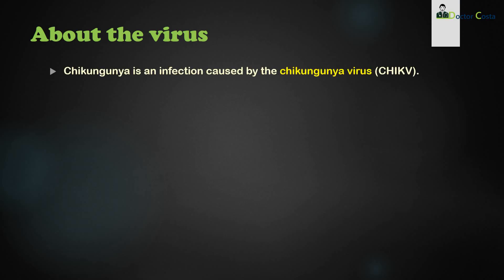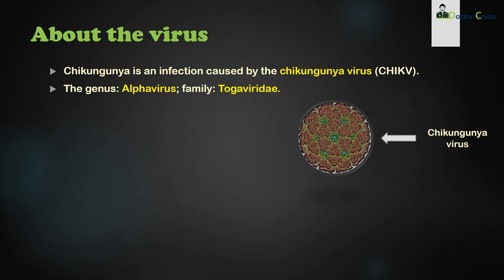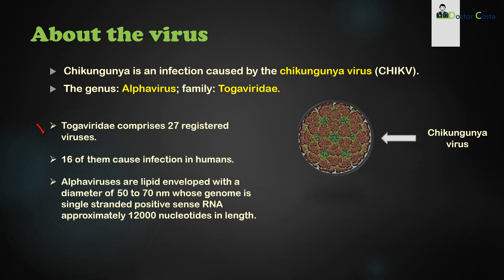Chikungunya is an infection caused by the chikungunya virus. The genus of this virus is Alphavirus and the family is Togaviridae. This round thing is the chikungunya virus. Togaviridae comprises 27 registered viruses, 16 of which cause infection in humans.